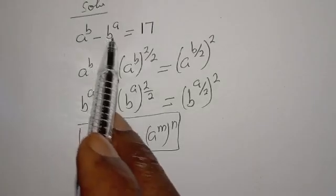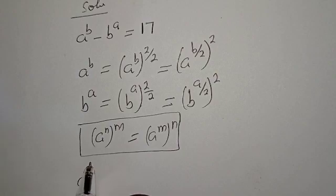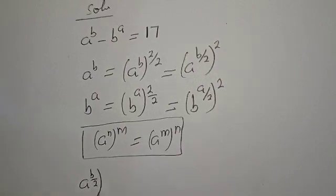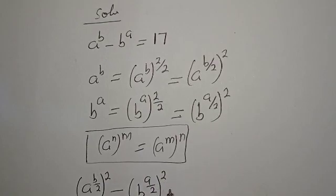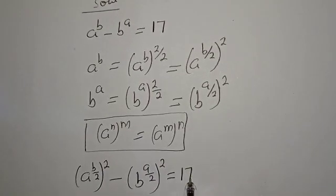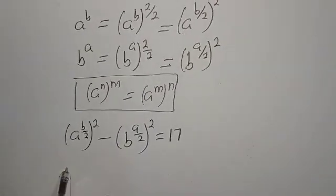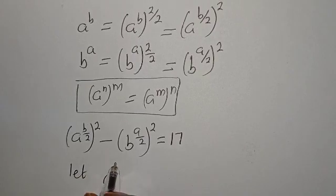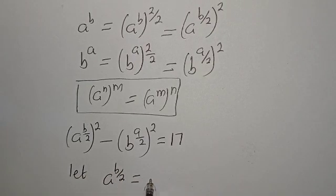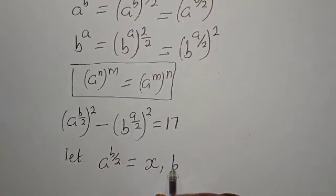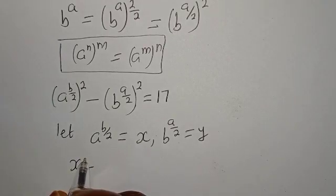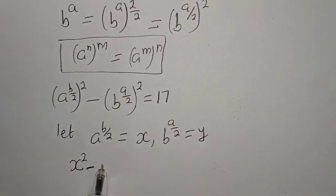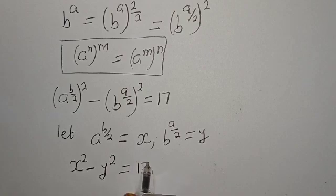Let's substitute this back into the original equation. We have A raised to power B over 2, squared, minus B raised to power A over 2, squared, is equal to 17. Let A raised to power B over 2 equal X, and B raised to power A over 2 equal Y. Then this becomes X squared minus Y squared is equal to 17.